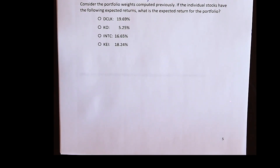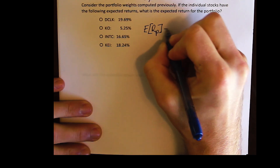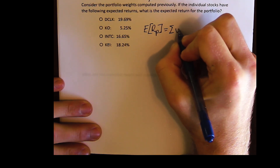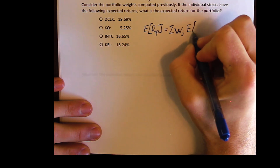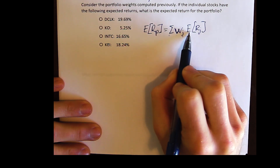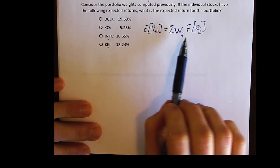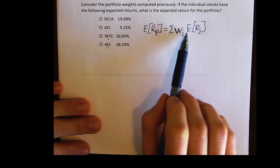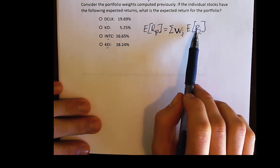When talking about the expected return of a portfolio, there are two ways to calculate it. The first method says the expected return of a portfolio is equal to the weighted average return of the assets' expected returns — the sum of the weight of each asset J times the expected return of each asset J. This is just like the expected return formula for an asset, except the weight is a portfolio weight instead of a probability.